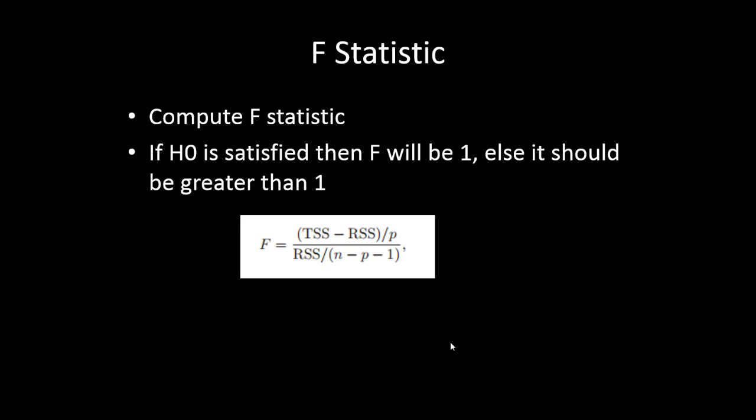We will not go into the details of this proof, but it should be greater than 1 - significantly more than 1 - for the alternative hypothesis to be valid or the null hypothesis to be rejected. We expect the F value to be more than 1 most of the time.